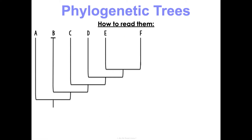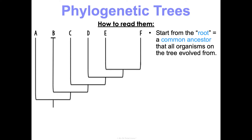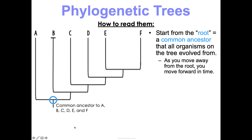How do we read them? That's what I really care about — that you can read and interpret these diagrams, especially on standardized exams where these come up a lot. First, when looking at these, always find the root. That is your common ancestor that all the organisms on the tree are predicted to have evolved from. This root represents a common ancestor to A, B, C, D, E, and F — all of them have this common ancestor. As you move away from the root, you're moving forward in time, so down here would be past and up here would be more recent.